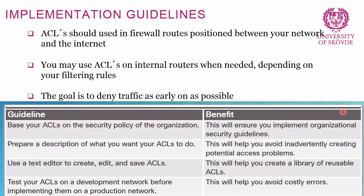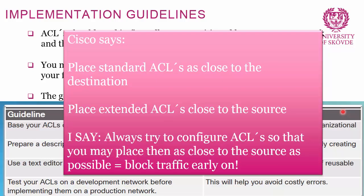Cisco's implementation guidelines begin with basing your ACLs on your organization's security policy. When creating ACLs, prepare a description of what you want them to do. It's smart to use a text editor to create, edit, and save ACLs — you can copy them directly into your router and build a reusable library. Always test your ACLs on a development network before deploying to production to avoid costly errors.